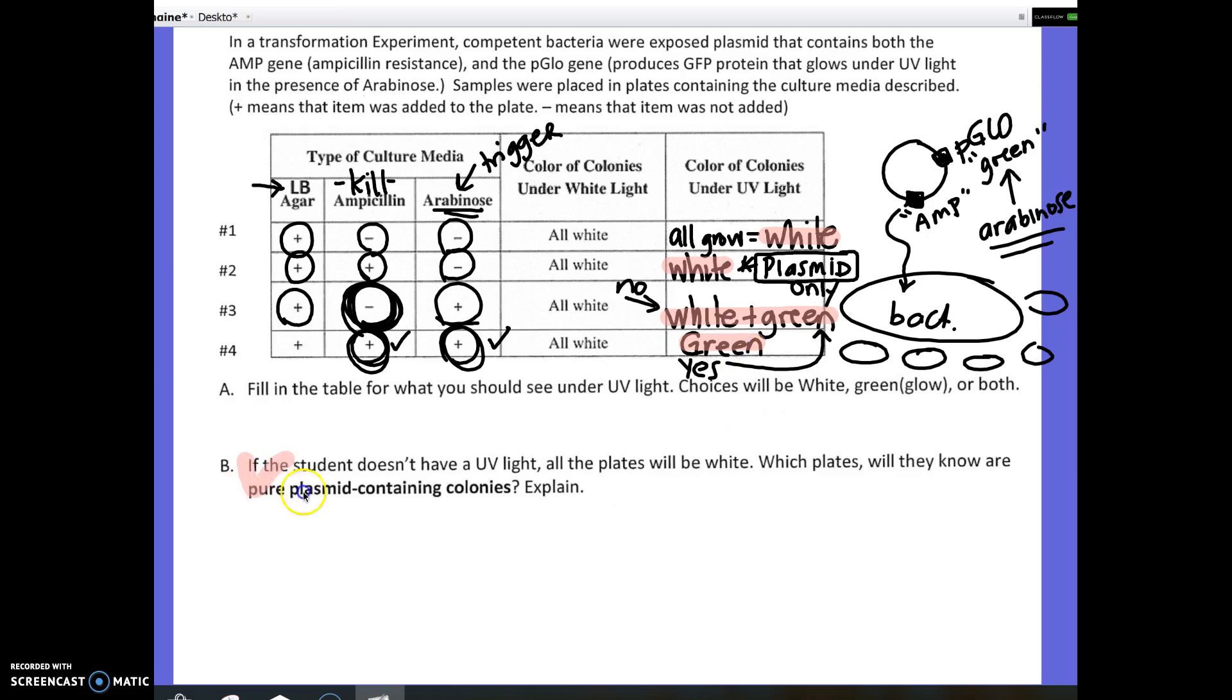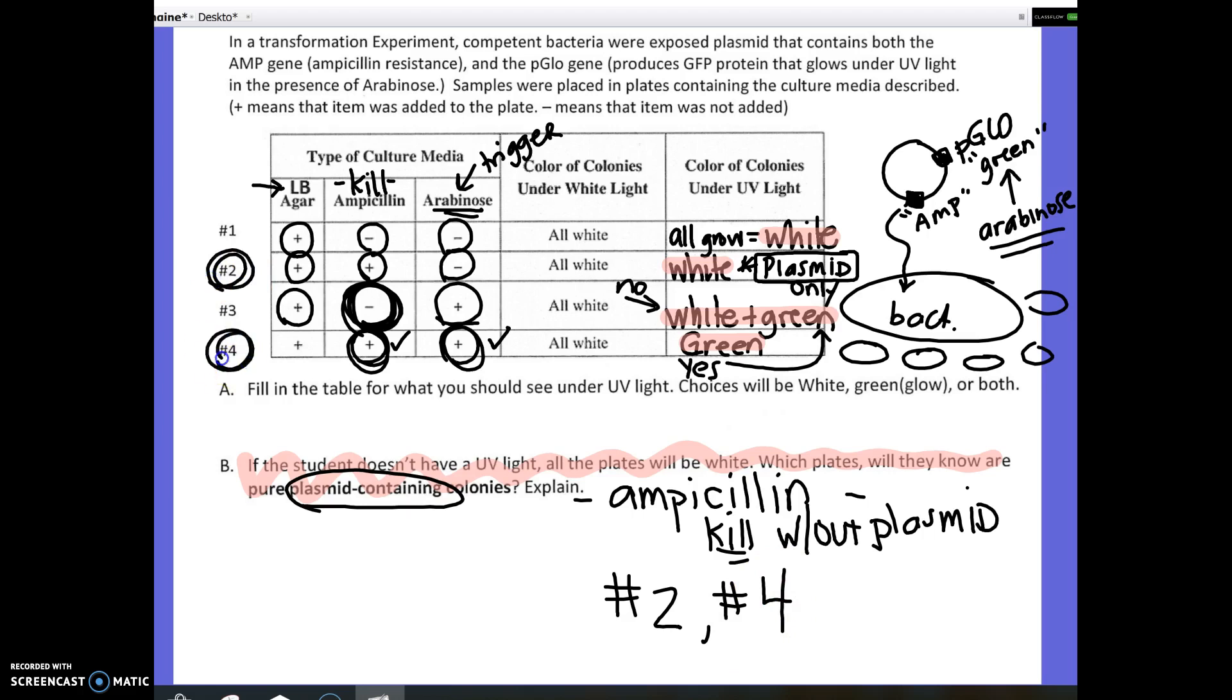Now, on which plates, basically what they're asking in B, is on which plates will the student know that only bacteria that picked up the plasmid are growing? Obviously, if you have a UV light, you could shine, and if all the bacteria were green, you would know that. But, you don't have to have a UV light to know which ones are pure. Remember, ampicillin kills bacteria. So, if we added any plate that we added ampicillin to, should kill the bacteria without plasmid. So, the answer to this question, on which plates do we know bacteria picked up the plasmid? Plate number two, and plate number four. Because both of these plates contained ampicillin, which would have killed any bacteria that did not pick up the plasmid.